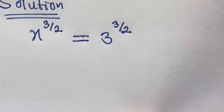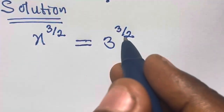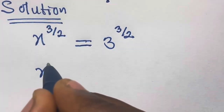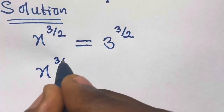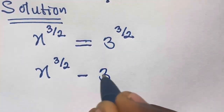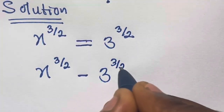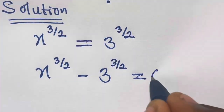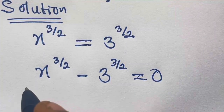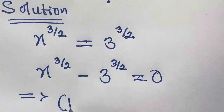From here, let's transfer this to the other side, so we have x raised to the power 3/2 minus 3 raised to the power 3/2 equals 0.